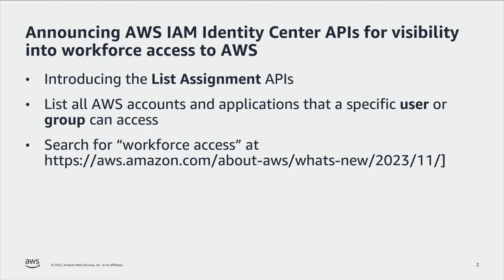Now, with the list assignment APIs for IAM Identity Center, AWS simplifies how to view who has access to what AWS accounts and applications. With these APIs, you can list all AWS accounts and applications that a specific user or group can access.